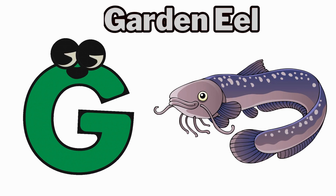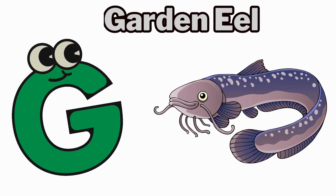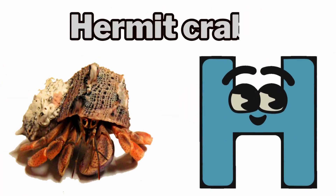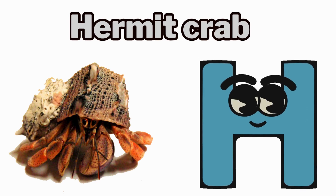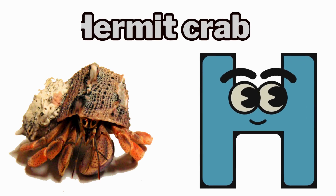G is for garden eel, guh, garden eel. H is for hermit crab, huh, hermit crab.